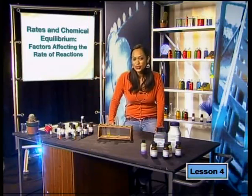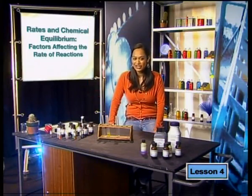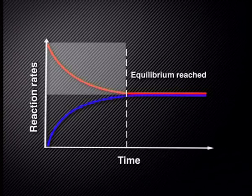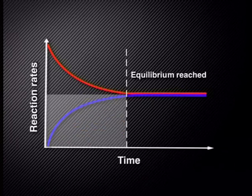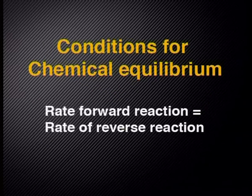Can you remember what happens when a chemical reaction in a closed system is in a state of chemical equilibrium? The graph shows how the rate of the forward reaction and the reverse reaction change over time for a closed system, until the rate of the forward reaction equals the rate of the reverse reaction — that is when the reaction is in chemical equilibrium.